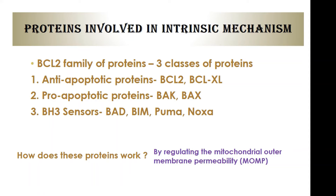Anti-apoptotic proteins, as the name suggests, are against the process of apoptosis and inhibit it. Pro-apoptotic proteins favor the process of apoptosis. The BH3 sensors detect damage in the cell and initiate apoptosis. The next question is how these proteins work and cause activation of the intrinsic pathway.